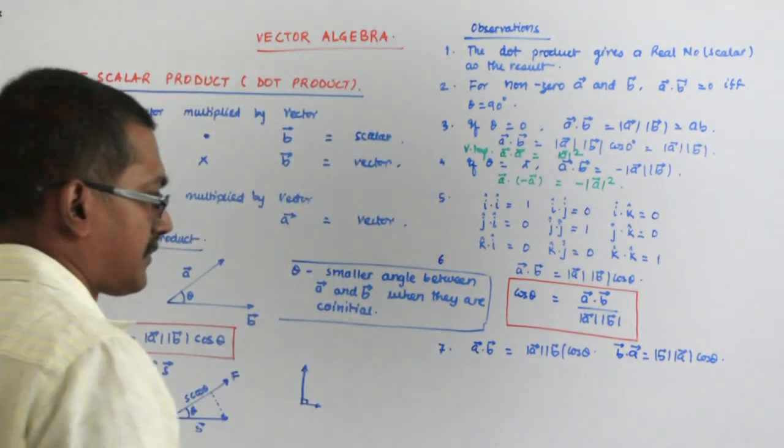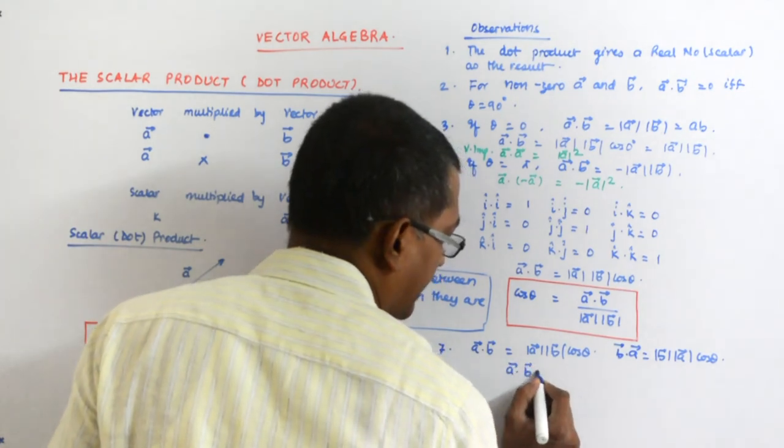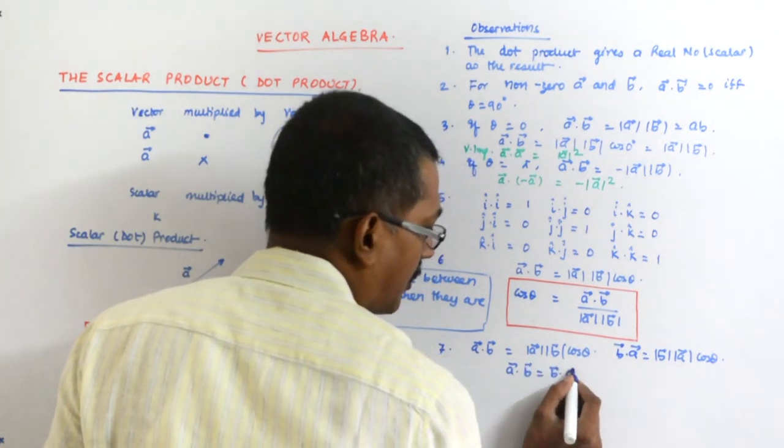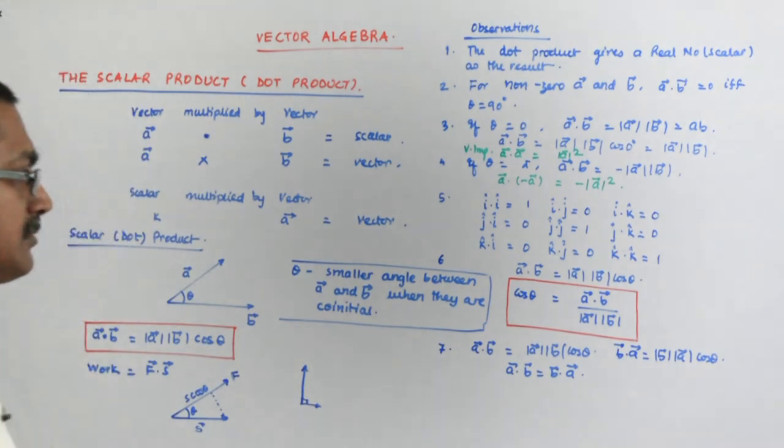They are the same. So, can I safely say that A dot B is B dot A? Yes, they are.